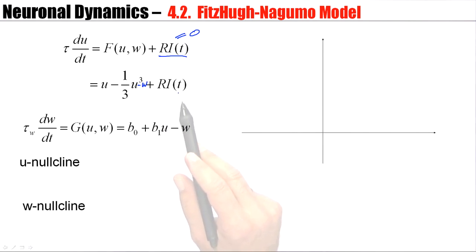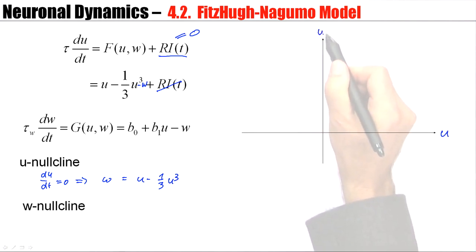Now, if we look at the zero points at the U nullcline, du/dt equals zero. So the left-hand side is zero, the current is zero, so I can put W to the other side. And I find W is U minus one-third U cubed. And this is a function that takes a value of zero if U is zero, also takes a value of zero if U is square root of three, and starts with a slope of one. So the function will more or less look like this. And then it's symmetric.